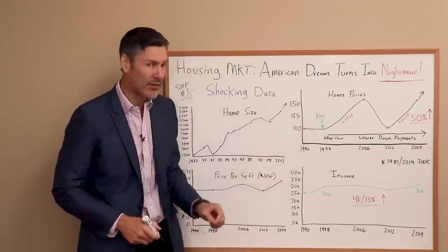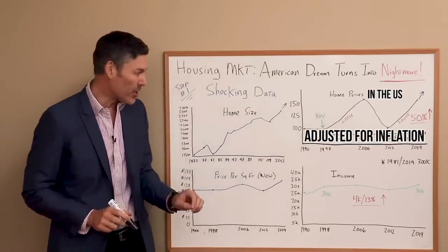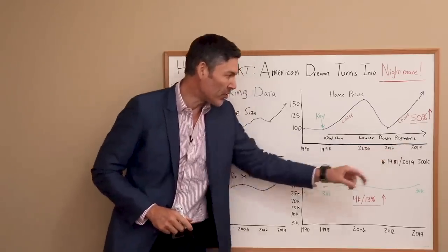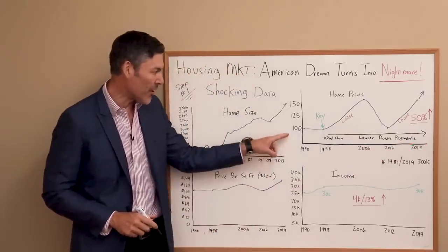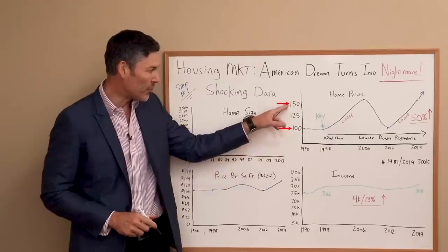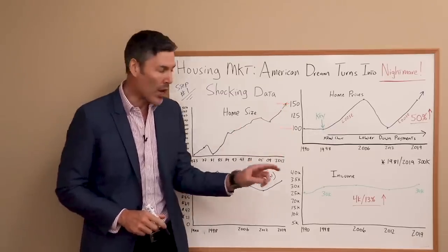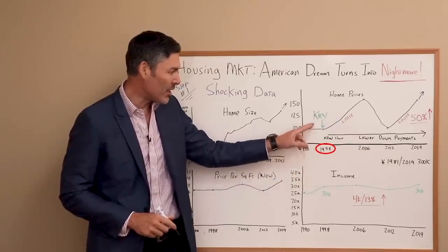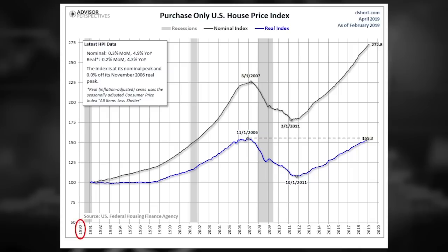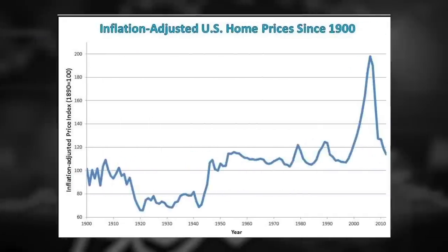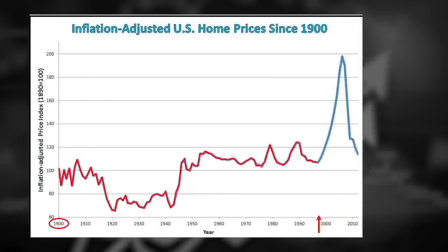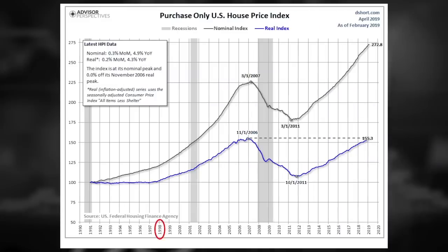This chart is of home prices in the United States adjusted for inflation. We go back to 1990 all the way to 2019. On the left, it's a percentage from 100% up to 150%. I want to point out 1998. The reason this chart only goes back to 1990 — the typical chart I use goes all the way back to 1900 — is that prices from 1900 all the way to 1998 adjusted for inflation are pretty much the exact same. So we can start right here from 1998 because that's when housing prices go berserk.